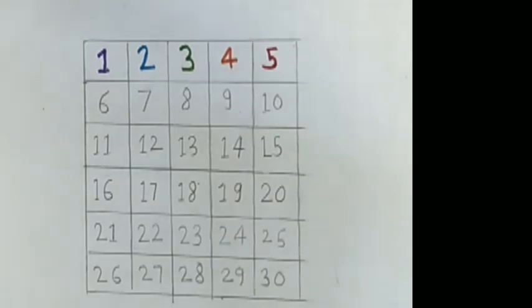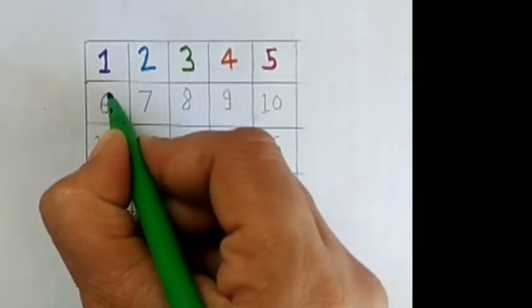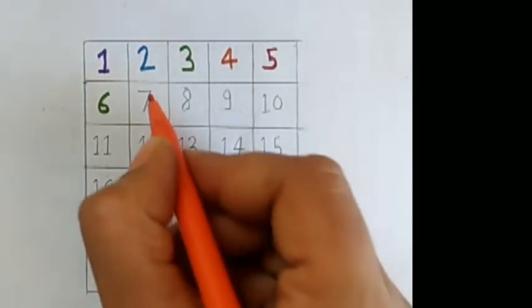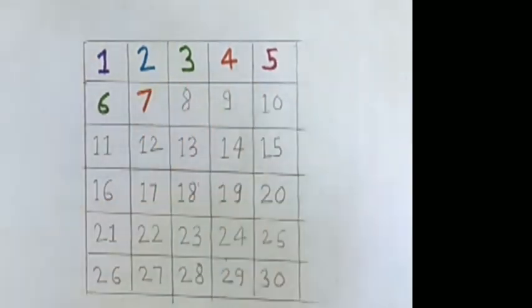5, red color. 6, green color. What comes after 6? 7.